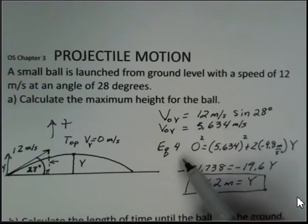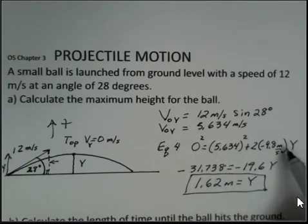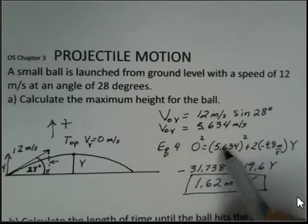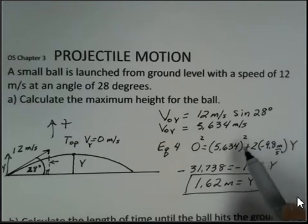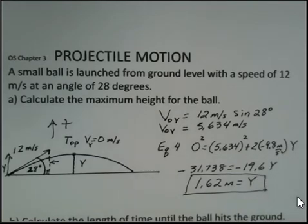It is very important here. I'm only using numbers in the y direction. I don't use anything in the x direction mixed with some y number. You always keep the x numbers separate from the y numbers. The only exception is time. The time number is the same for the x and y motion. I've squared, subtracted from both sides. 2 times minus 9.8 is minus 19.6. We divide by 19.6 on both sides, and we find 1.62 meters for the maximum height.